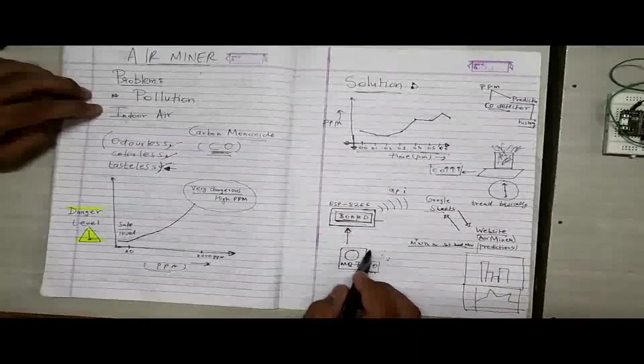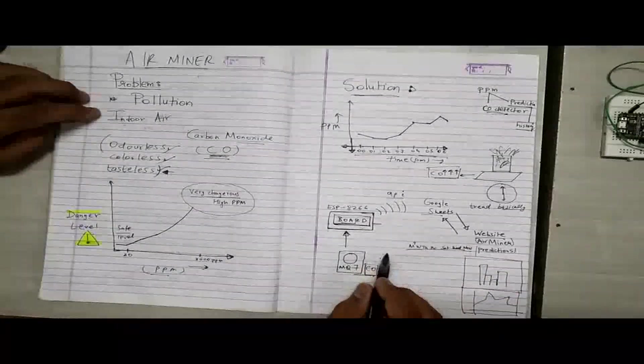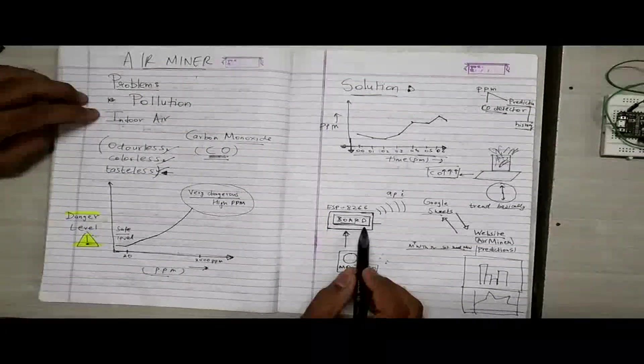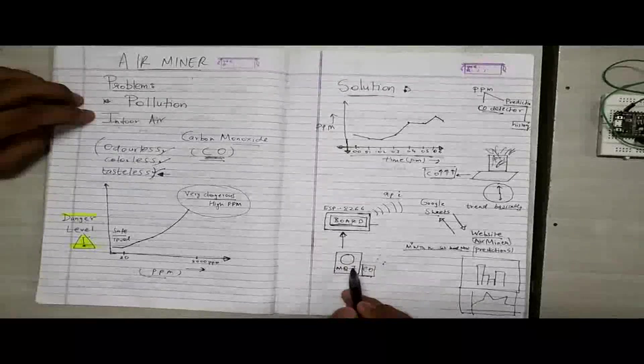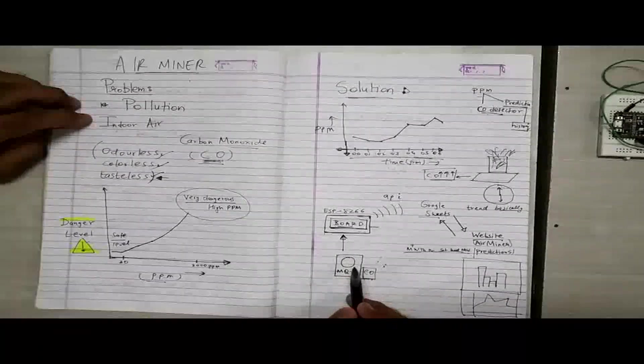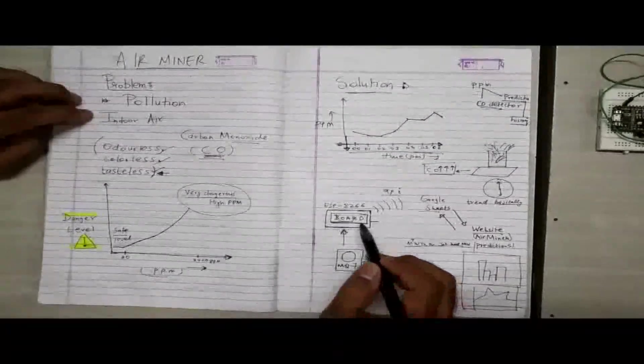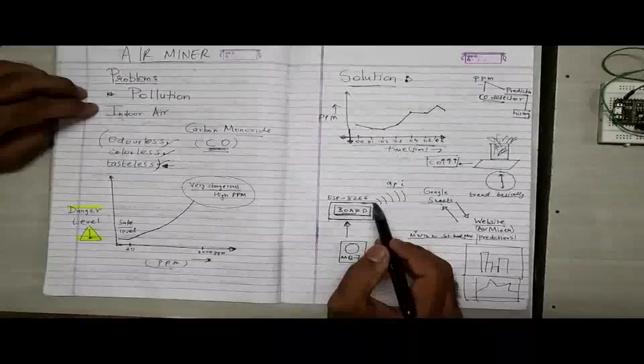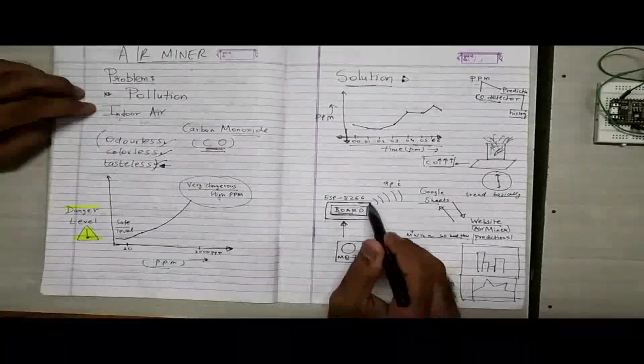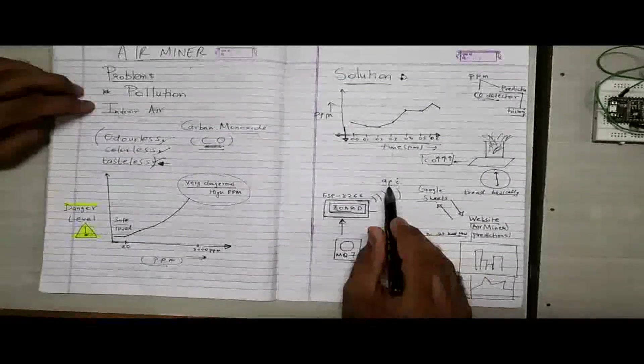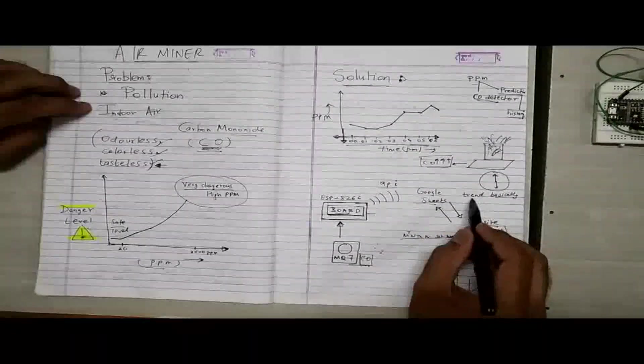The schematic or the final system for this is very simple. You have a board, a microcontroller board, and that board is used with the MQ7 CO sensor. From that board, we use the Wi-Fi module to send the PPM values to Google Sheets using an API. Inside the Google Sheets, there is a trend function.